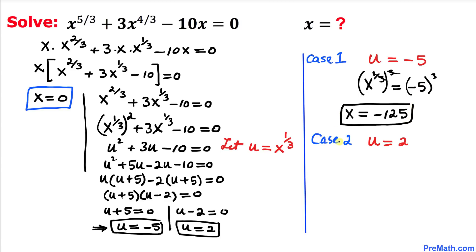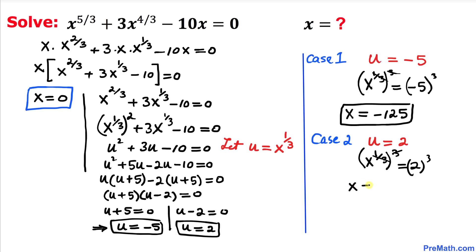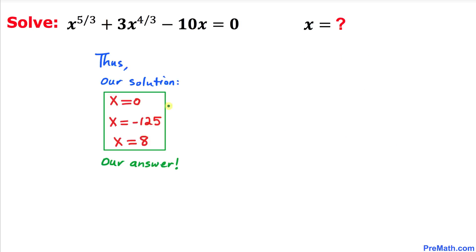For case 2, when u equals 2: since u equals x to the power 1 over 3, we have x to the power 1 over 3 equals 2. Taking the power of 3 on both sides, the 1/3 and 3 cancel, giving x equals 2 cubed equals 8. Thus our solutions are x equals 0, x equals negative 125, and x equals 8. Thanks for watching and please don't forget to subscribe to my channel for more exciting videos.